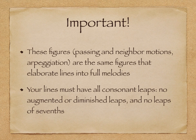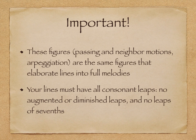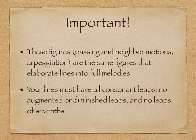There are two important ideas to emphasize here. These figures — passing motion, neighbor motion, and arpeggiation — are the same figures that elaborate lines into full melodies. As I said at the beginning of the video, a good underlying line makes a good melody. Secondly, the lines that you write must have all consonant leaps. This means there are no augmented or diminished intervals between successive pitches and no leaps of sevenths in your lines.